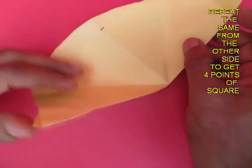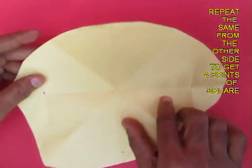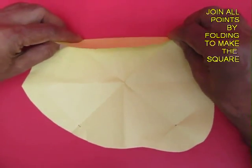Now on opening the paper you will get four points which will be the four corners of a square.